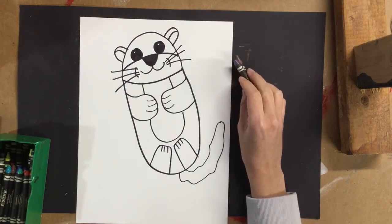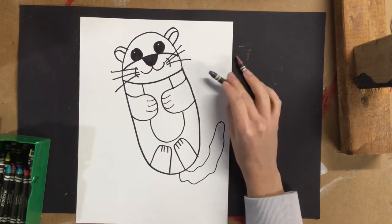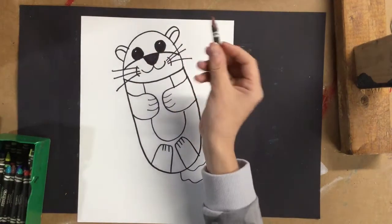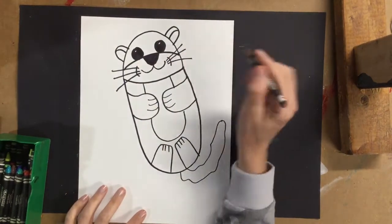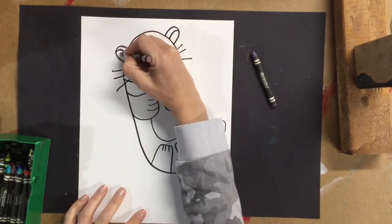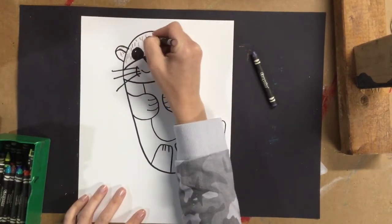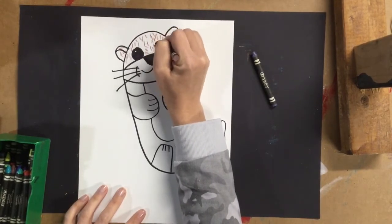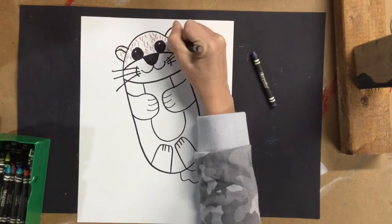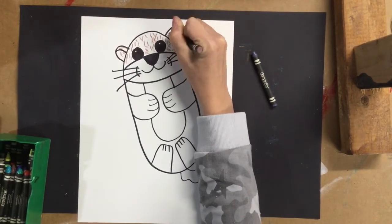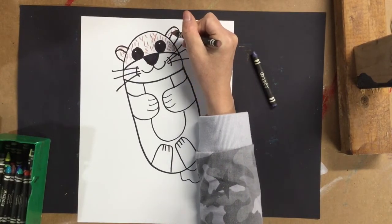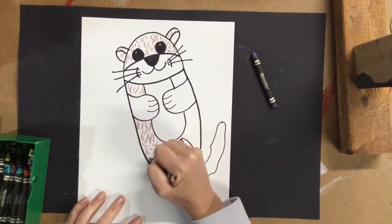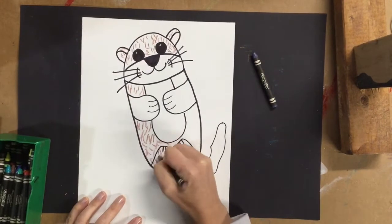I'm actually going to use a brown crayon for this part, and I'm going to start filling his head with little dashed lines to make it look like his fur. And you can make those lines kind of go any way you want. Just lots of little dashes. And we're going to fill the outside of this body with dashes.